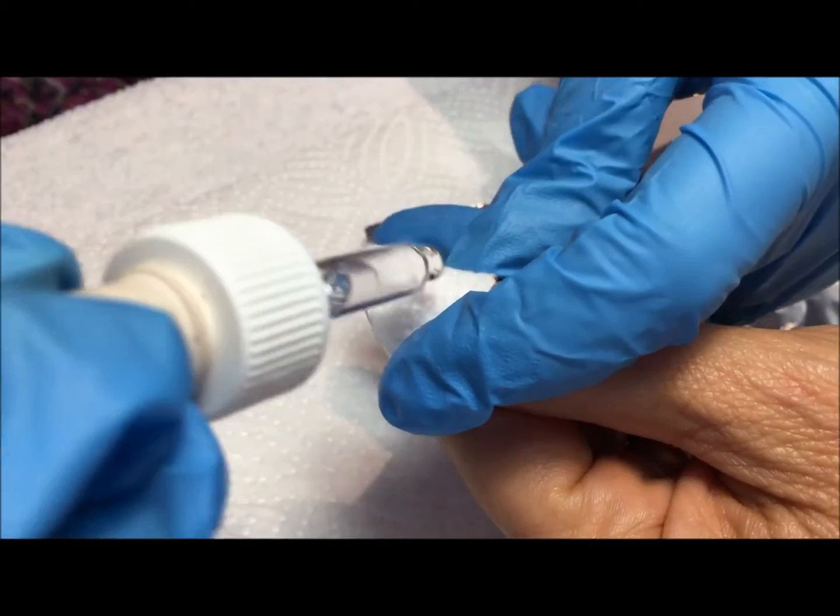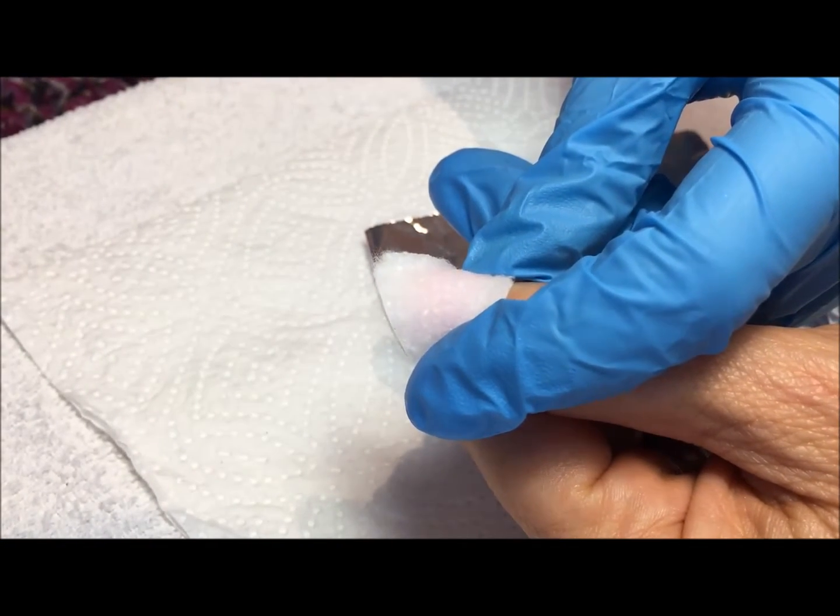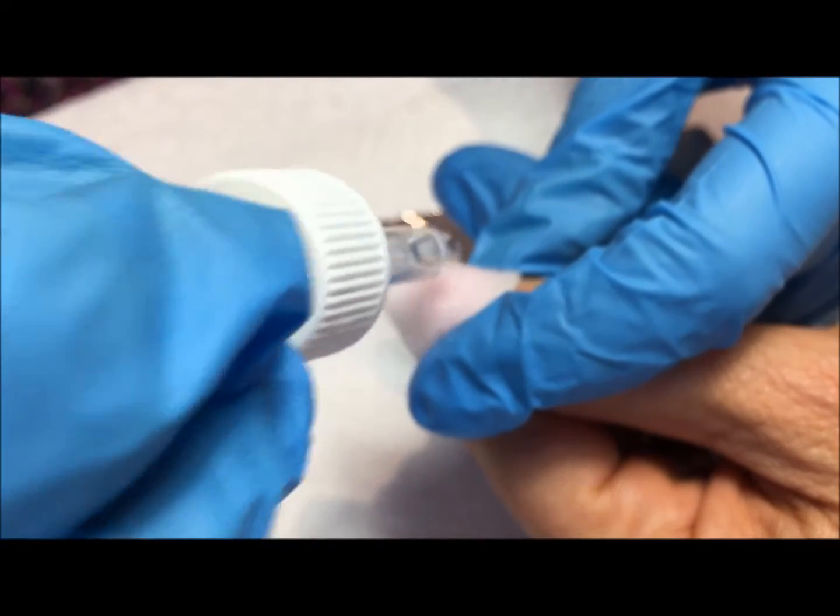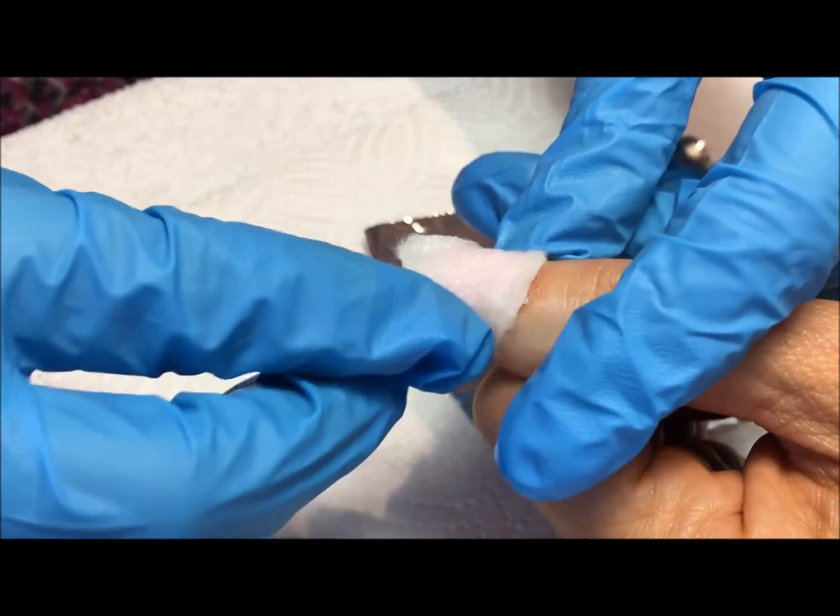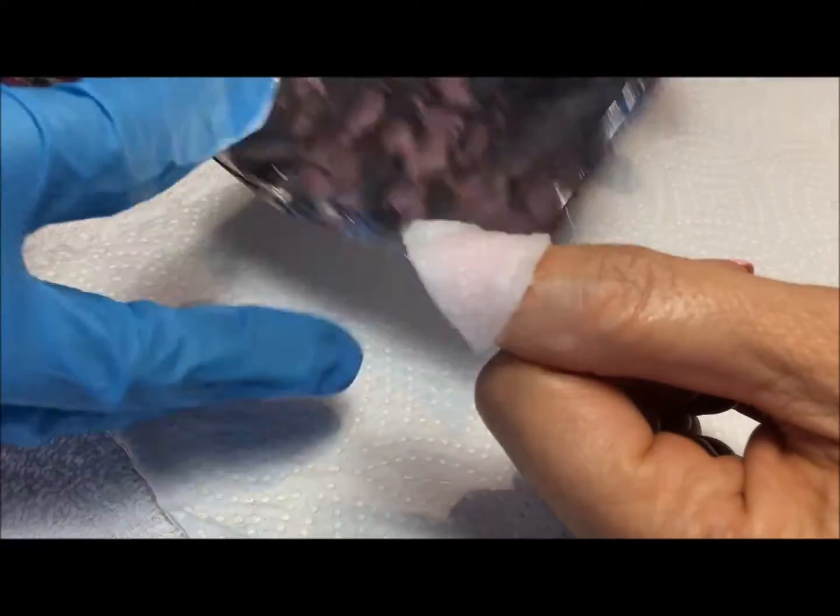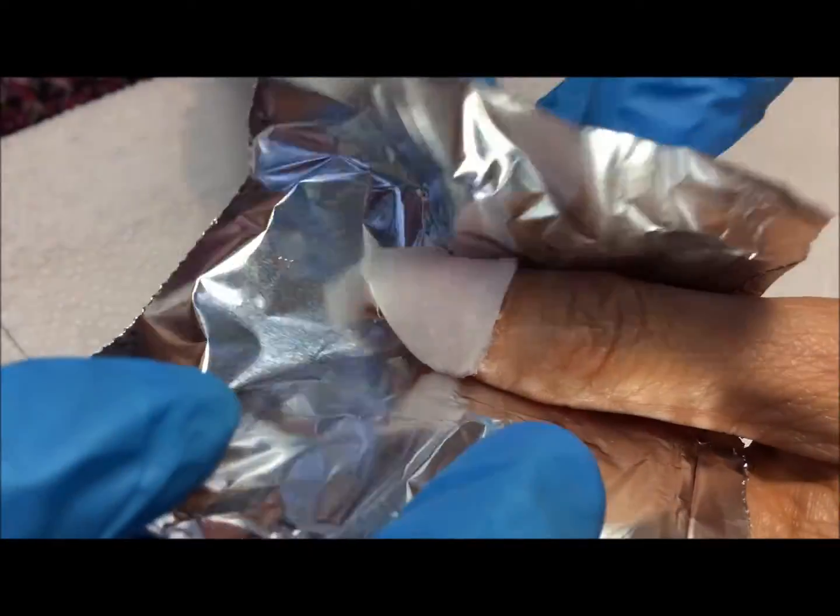If you don't use enough gel remover, it will take longer for the Easy Soak Gel Polish to release from the nail plate. When wrapping the nails, make sure not to apply pressure or squeeze the cotton pad. You want to keep as much gel remover on the Easy Soak Gel Polish as possible.